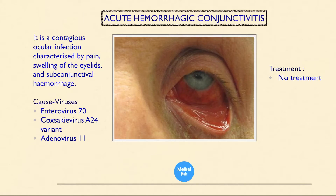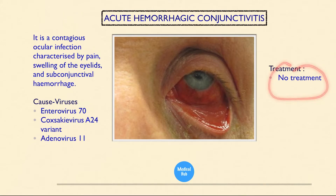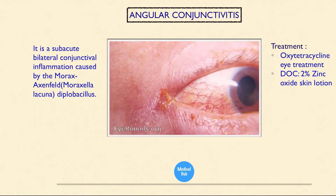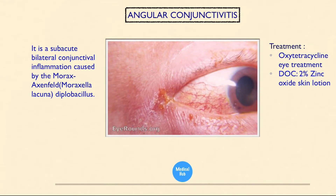Next is acute hemorrhagic conjunctivitis — a contagious ocular infection characterized by pain, swelling of the eyelids, and subconjunctival hemorrhage. Causes are viruses: Enterovirus 70, Coxsackievirus A24 variant, and Adenovirus 11. There is no specific treatment for hemorrhagic conjunctivitis.